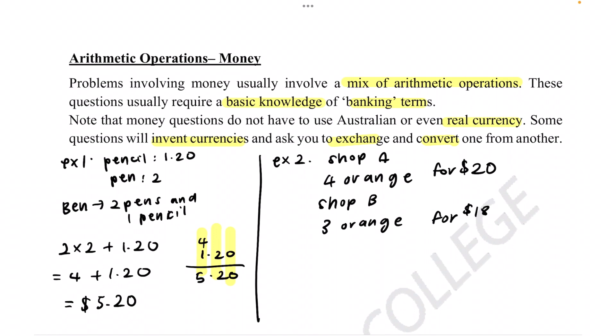So in order to calculate this, let's have the same comparison rate. Let's try and go for one orange for each shop. So shop A, for one orange it would be 20 divided by 4 which equals $5. And then for shop B, for one orange it will be 18 divided by 3 which is $6. Therefore we can say that shop A has a better price.